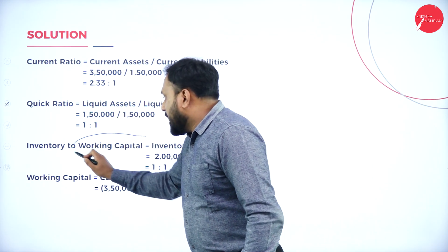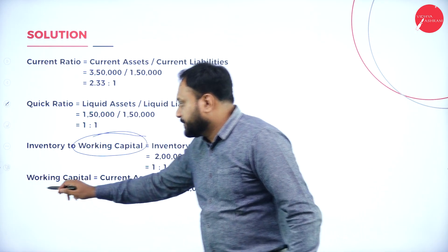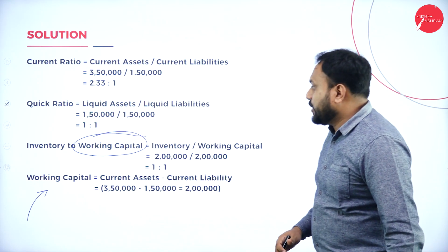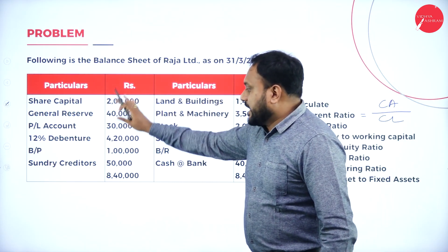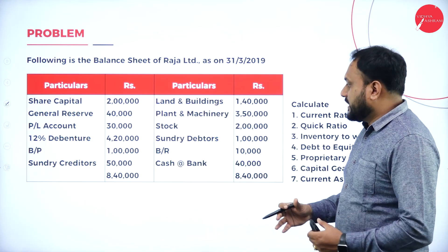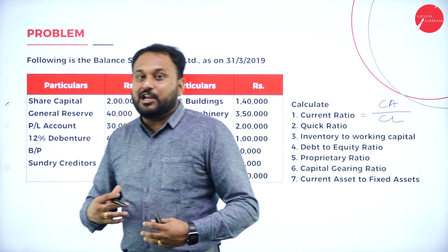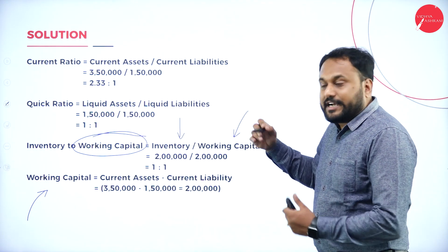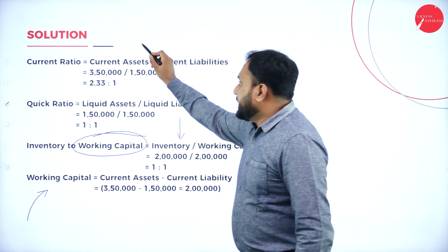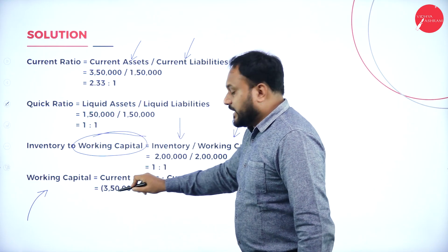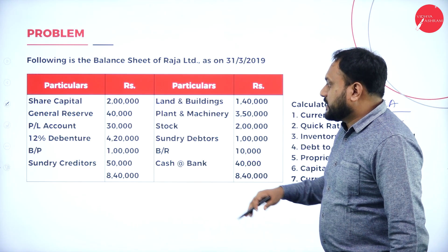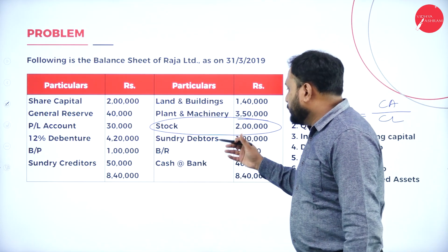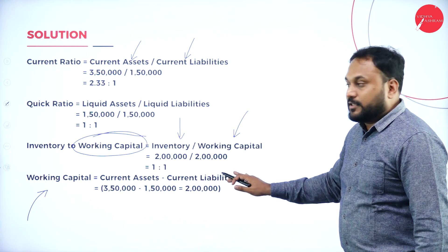Inventory to Working Capital: you have inventory and working capital, so the formula is Inventory divided by Working Capital. Working Capital is Current Assets minus Current Liabilities — here that is 3,50,000 minus 1,50,000. Your inventory means your stocks. So it is 2 lakh divided by the working capital. That is how inventory to working capital ratio is calculated.